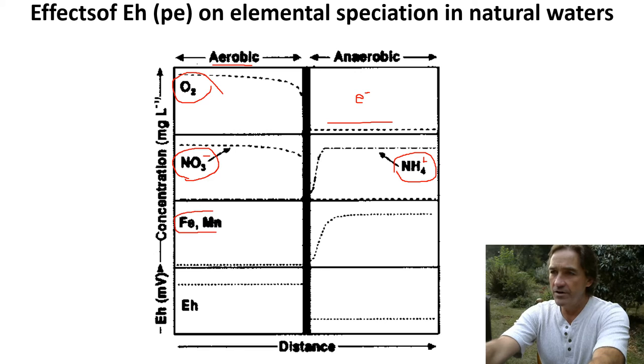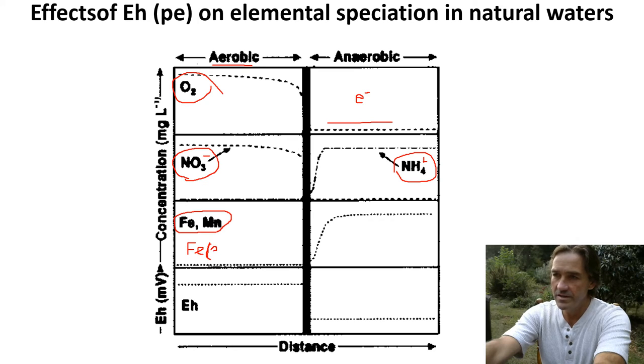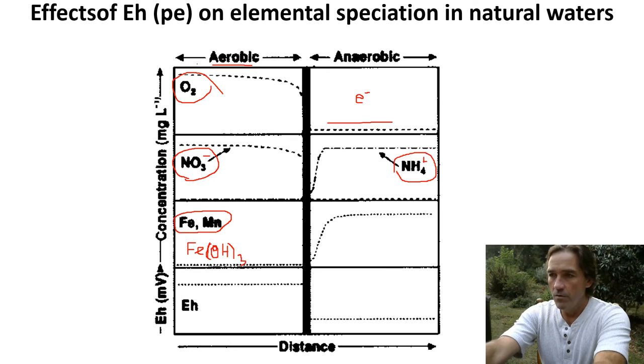Iron and manganese are interesting in that in an aerobic environment, they form oxides. They react with oxygen and they form solids. They form either iron hydroxide or rust, or for manganese it forms a manganese oxide. So it's removed from the water because it turned into a solid. But at a certain reduced potential, negative potential, it will turn into soluble species.